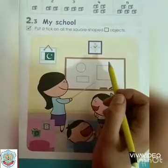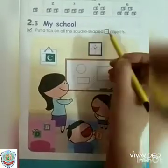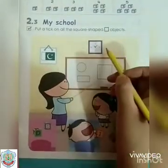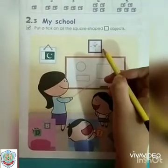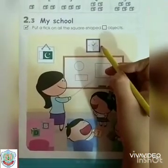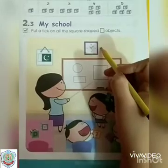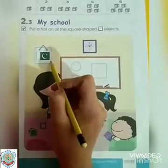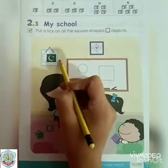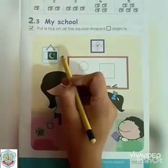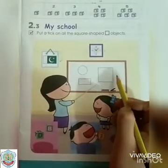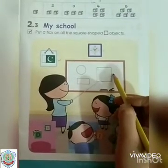Now we will identify the square objects. The clock is in the shape of a square — we will put a tick on it. This frame is also in the shape of a square, so put a tick on it. In this whiteboard, you can see the shape of a square — put a tick on it.